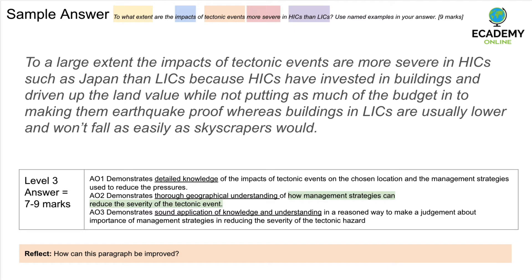Let's look at this sample answer: 'To a large extent, the impacts of tectonic events are more severe in HICs such as Japan than LICs because HICs have invested in buildings and driven up land value while not putting as much of the budget into making them earthquake proof, whereas buildings in LICs are usually lower and won't fall as easily as skyscrapers would.' This is a single sentence with no breaks — grammatically not good. The candidate hasn't talked about specific impacts, only generalised about investment in buildings, and the land value point is not really relevant. Overall, this would not get many marks.